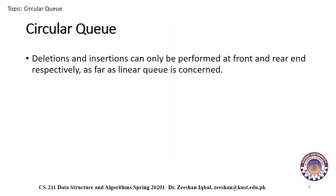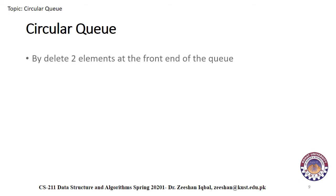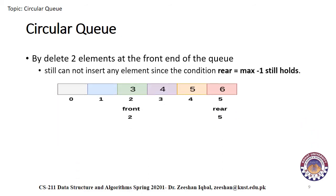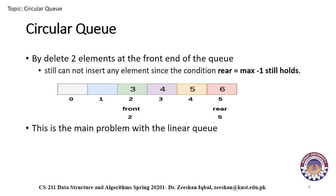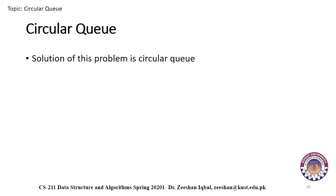In a circular queue, deletion and insertion can only be performed at the front and rear ends respectively, as far as the linear queue is concerned. Consider the queue shown in the figure — it is completely filled and no more elements can be inserted due to the condition rear equals max minus one. However, if we delete two elements at the front end, we still cannot insert any elements since the condition rear equals max minus one still holds. This is the main problem with the linear queue: although space is available in the array, we cannot insert more elements. This memory wastage needs to be overcome, and one solution is the circular queue.